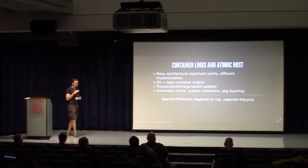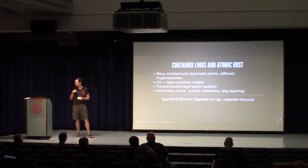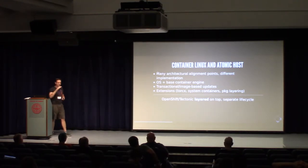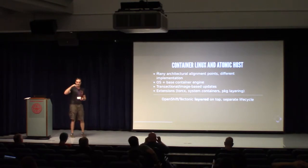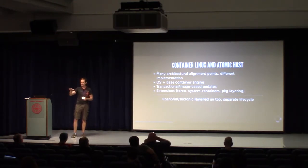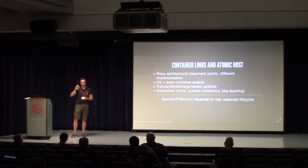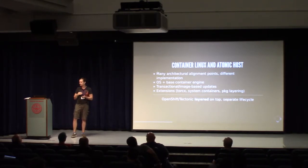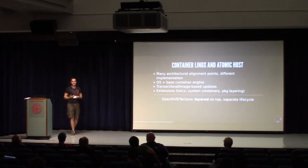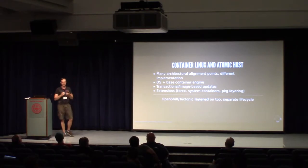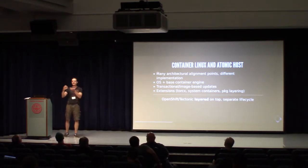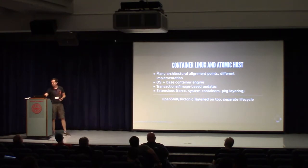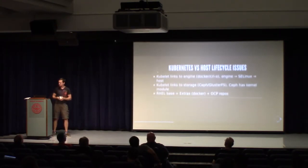One of the most important things we're changing right now: in both Container Linux and Tectonic you have layers — Container Linux as a base OS with Docker, and on top you install Tectonic, which is Kubernetes. They naturally support moving at different life cycles. The same was true with Red Hat Enterprise Linux, Atomic Host, and OpenShift — you install an operating system and then install Kubernetes on top.